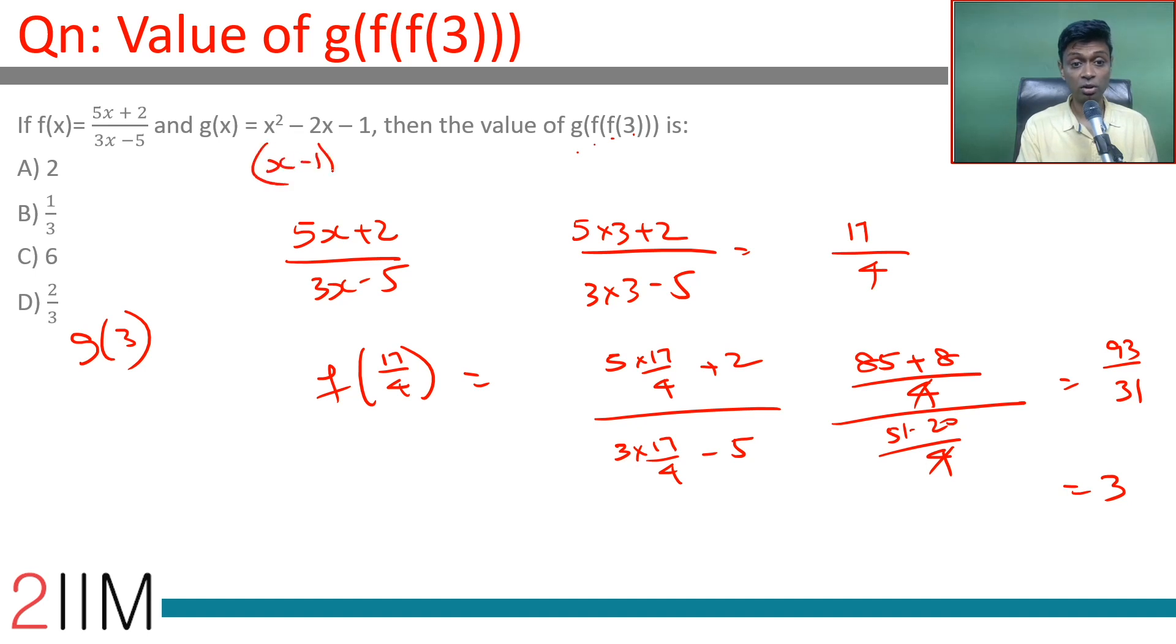This is 2 square minus 2, which is 4 minus 2, equals 2. Or using x square: 3 square minus 2 into 3 minus 1 is 9 minus 6 minus 1, which is 2.